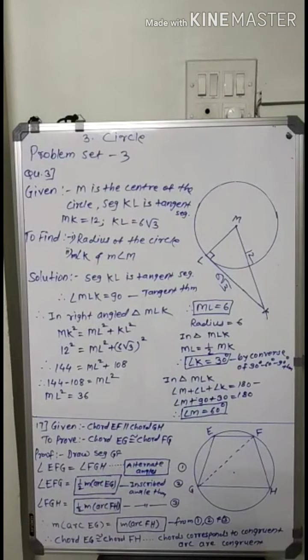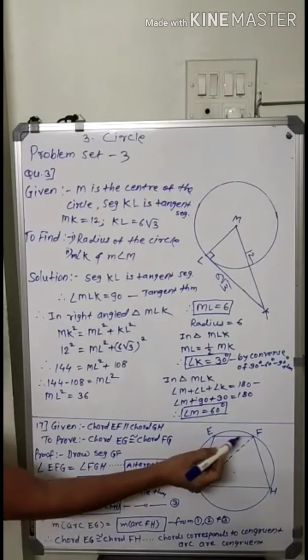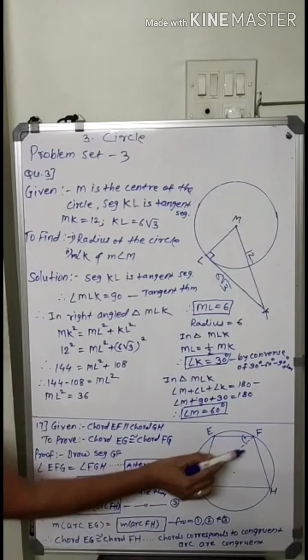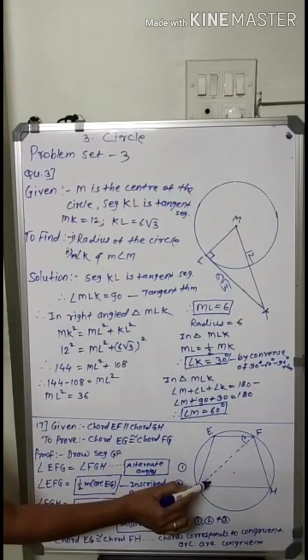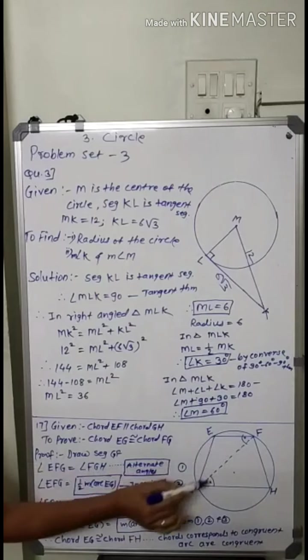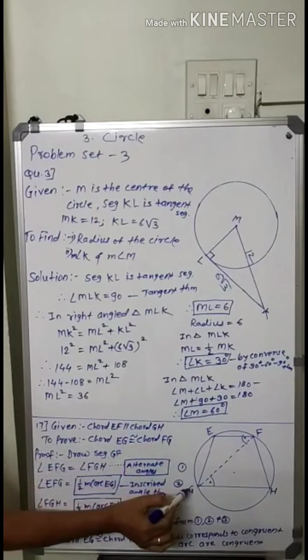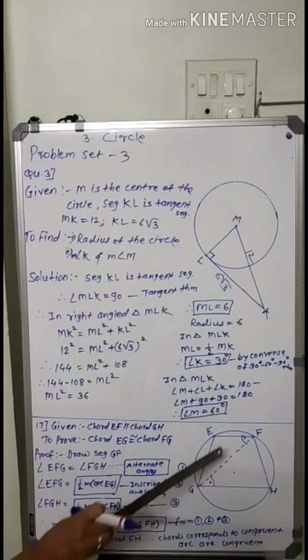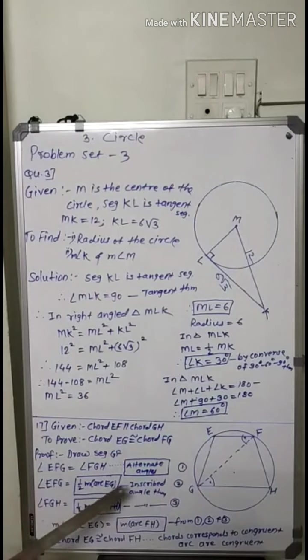Angle EFG, see in the figure, EFG means this angle, equal to angle FGH. These angles are congruent as EF parallel GH and FG is transversal. Therefore these are the alternate angles. So first fill in the blank is alternate angles.